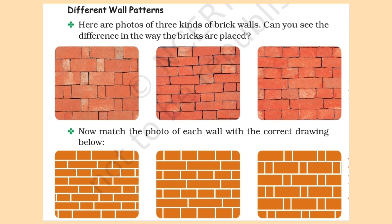Here are photos of three kinds of brick walls. Can you see the difference in the way the bricks are placed? In the first wall there is a big brick next to a small brick. In the second image, a big brick is placed with a small one upside down. In the third image, one row has big bricks and the second row has small ones. Now let us match each description to the correct wall.